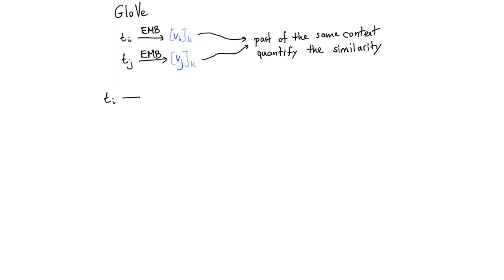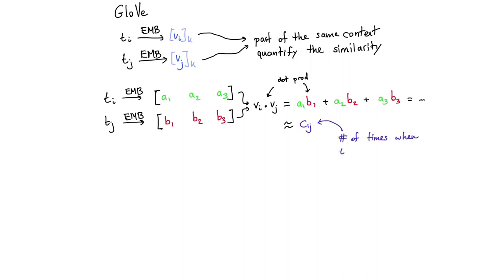When I have my token TI and it goes through this embedding, you can imagine that what I have in here is a numeric vector. I've also got that for the other token. What I could then do is calculate the dot product of these two. Let's now pretend that this has to be approximately equal to C of I, J, and this is the number of times when token I and token J co-occur.